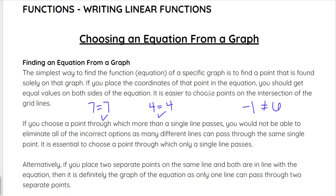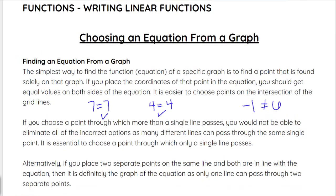If you choose a point where there's more than a single line that passes, then you would not be able to eliminate all of the options. So it can be helpful to pick a point where only one of the answer choices aligns. What we can do is pick one point, try it out on all of the options, and that can eliminate some answer choices. If it doesn't eliminate all of them, then we keep going with that method.